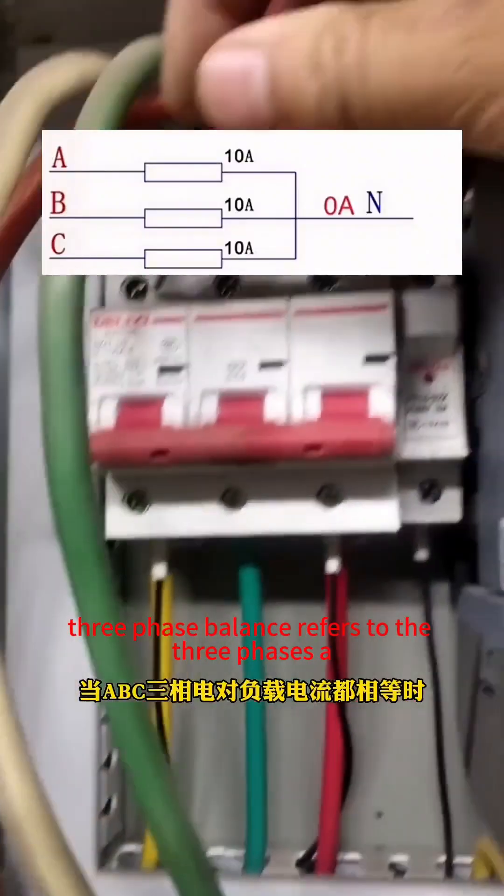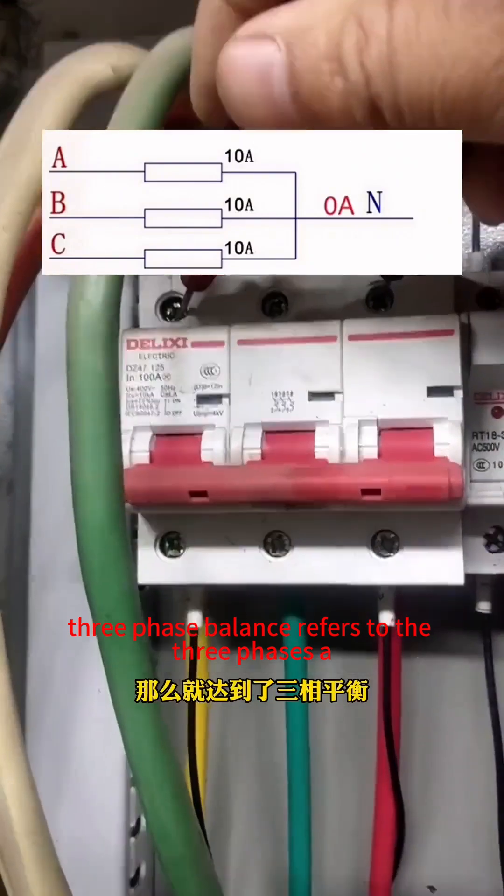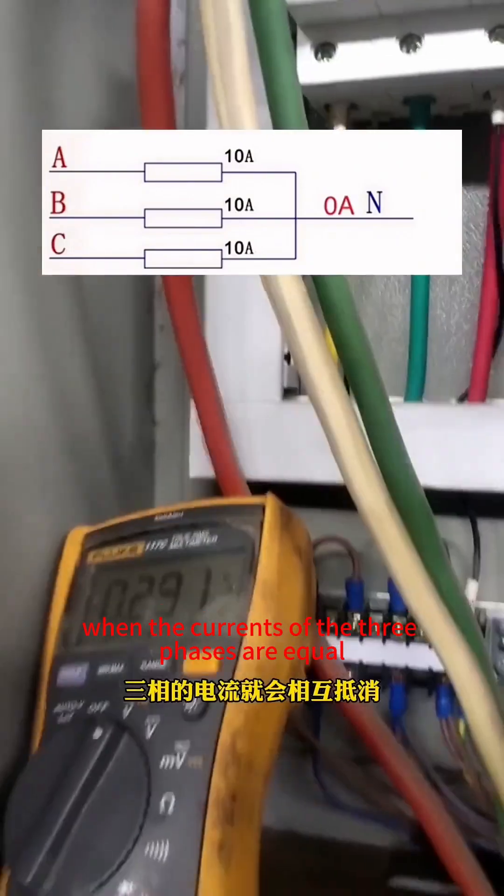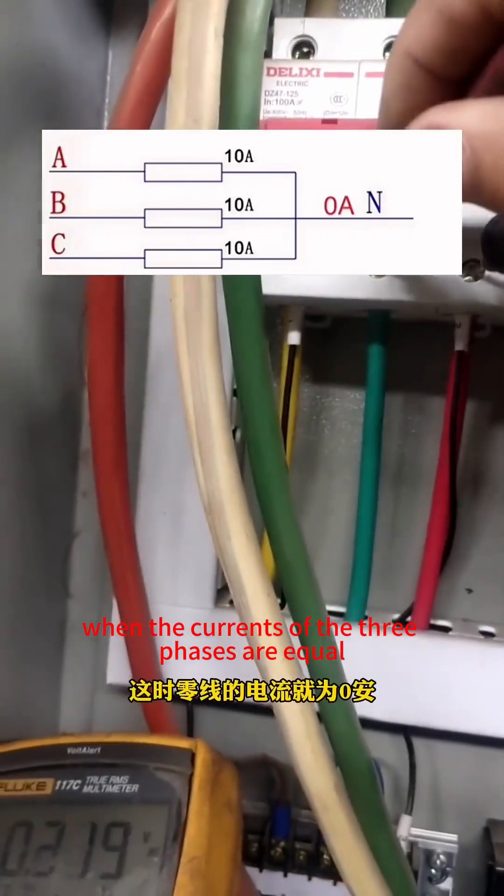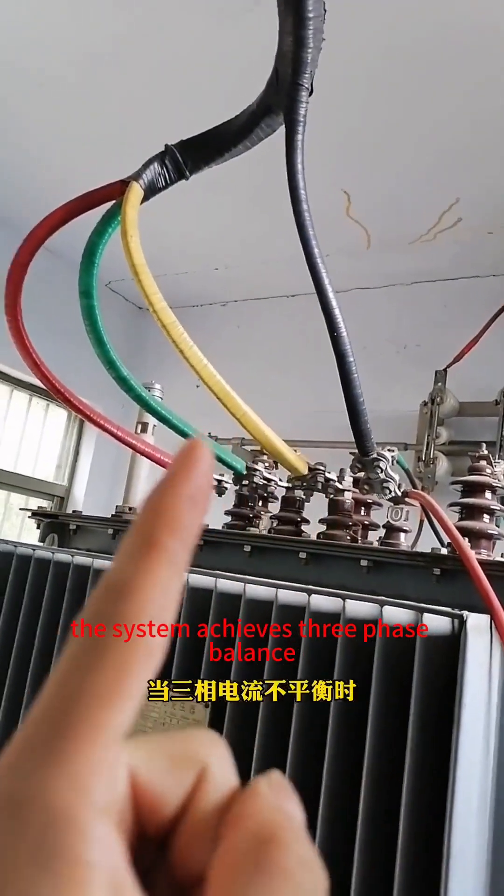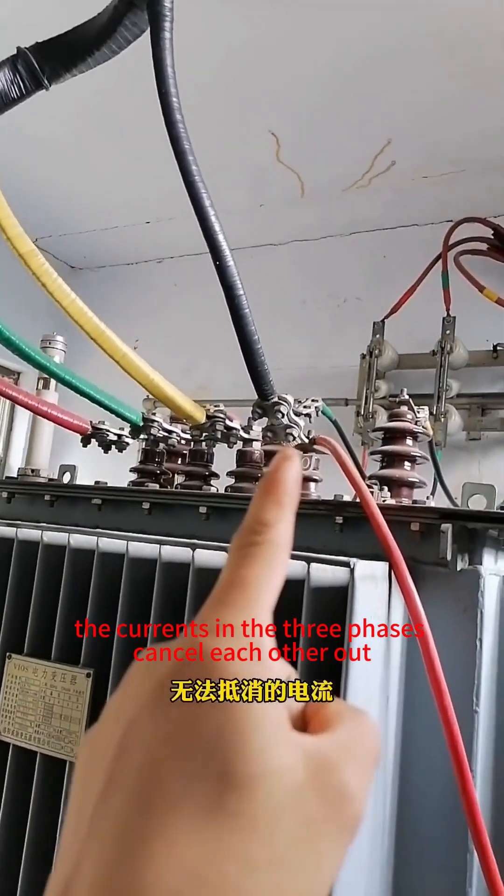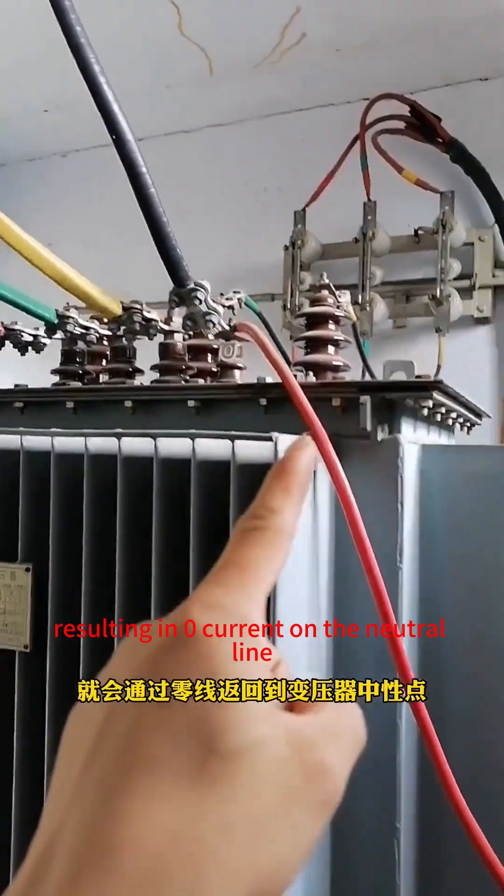To begin with, three-phase balance refers to the three phases A, B, and C sharing a common neutral line. When the currents of the three phases are equal, the system achieves three-phase balance. Under balanced conditions, the currents in the three phases cancel each other out, resulting in zero current on the neutral line.